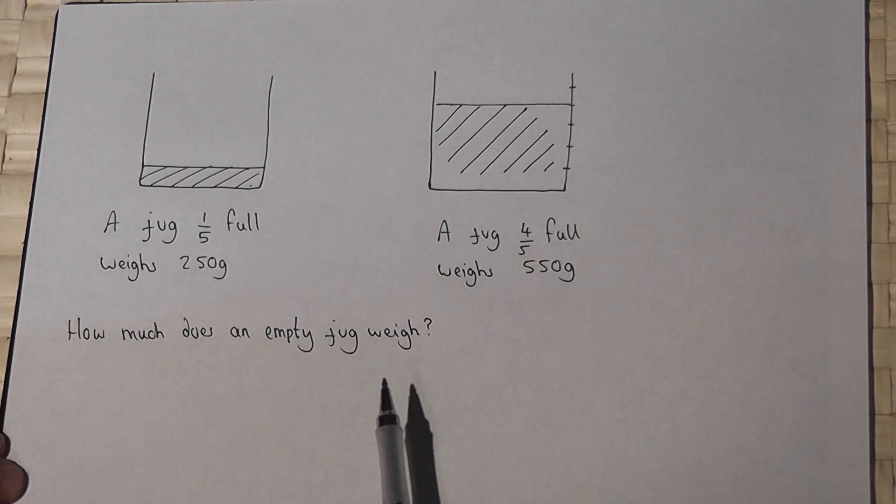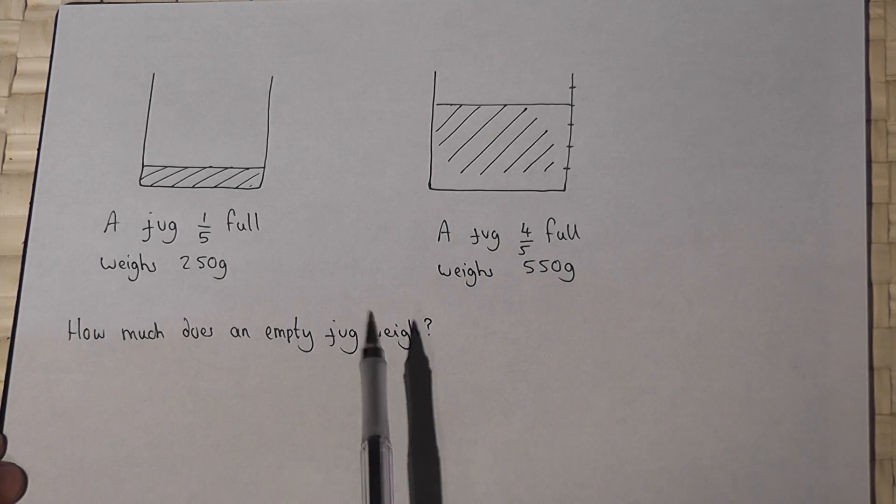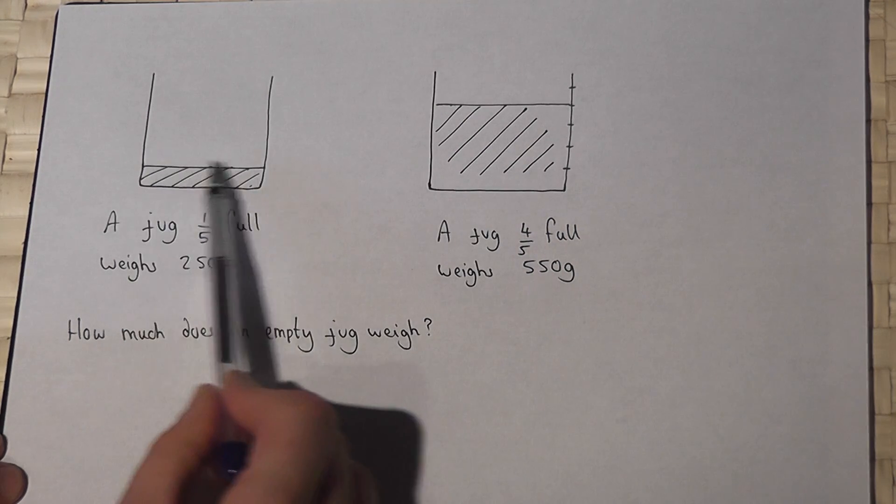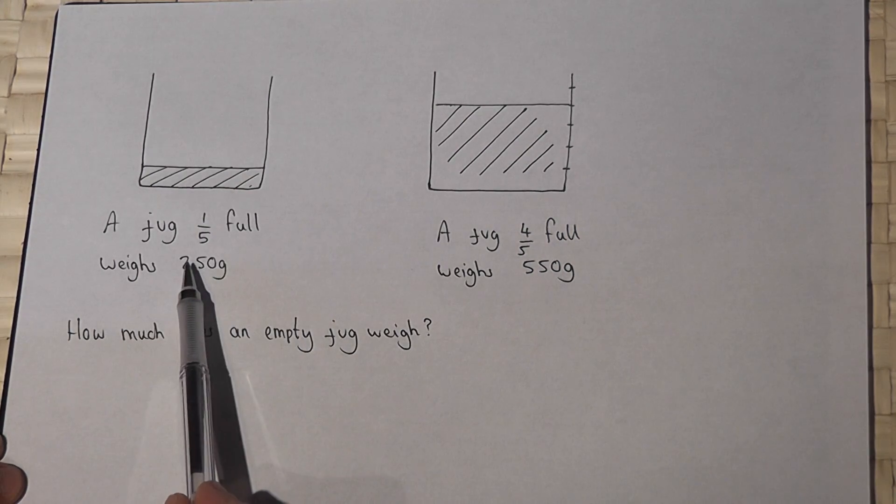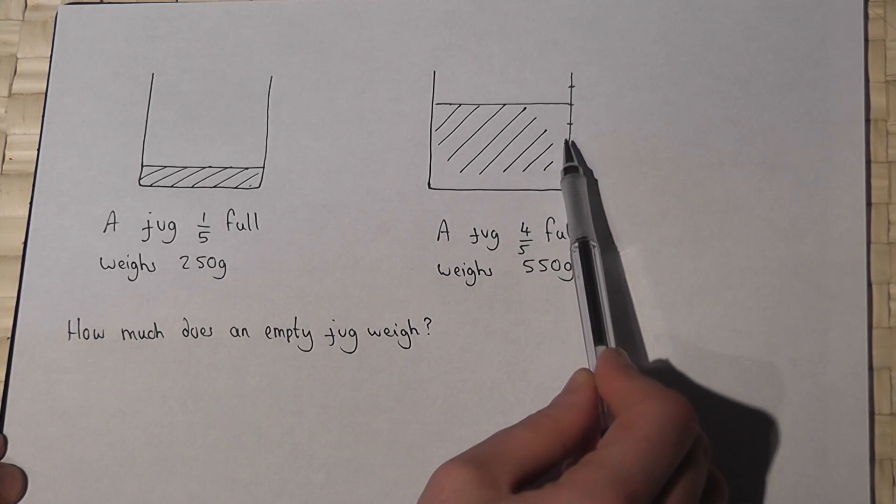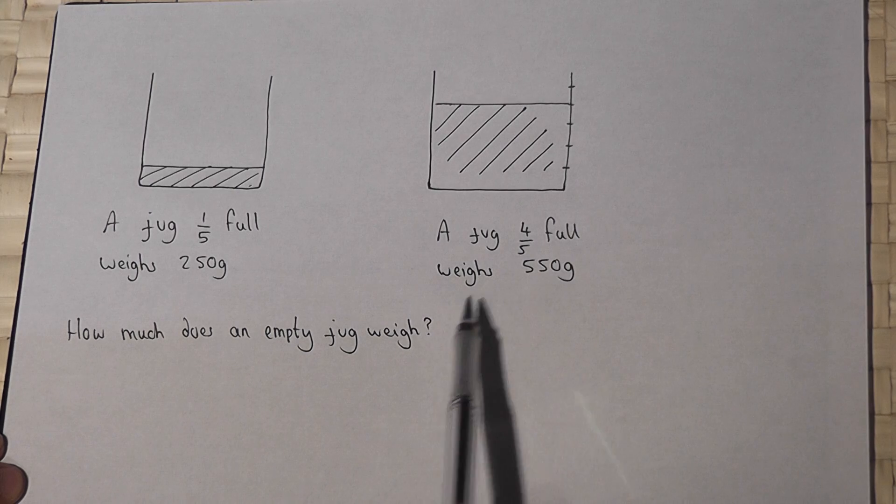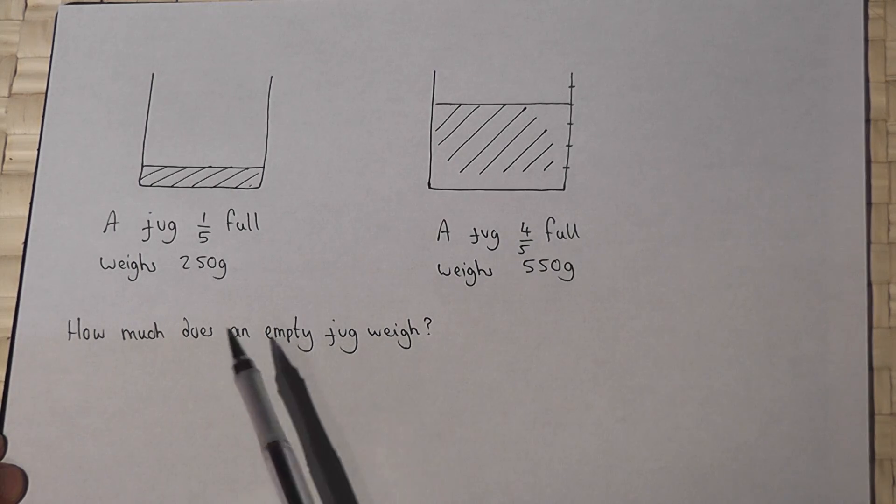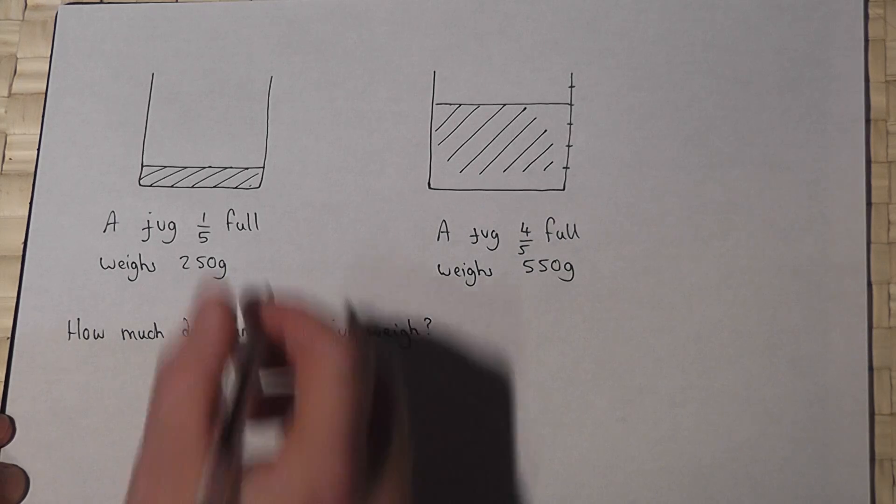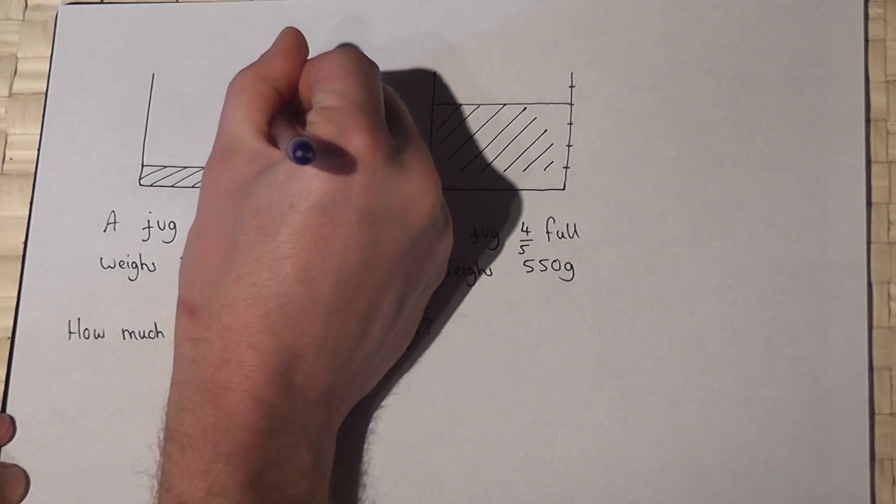This video looks at quite a nice problem in which we've got a jug which when it's one-fifth full weighs 250 grams, when it's four-fifths full it weighs 550 grams, and the question is therefore if there's no water in there, how much would the jug actually weigh?